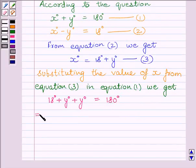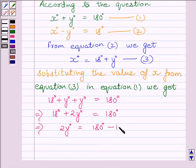This implies 18 plus 2y is equal to 180 degrees. This implies 2y is equal to 180 minus 18. This implies 2y is equal to 162 degrees.